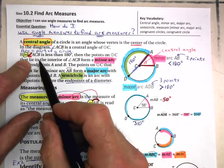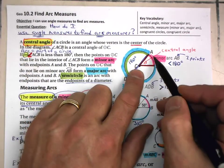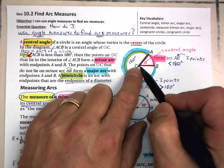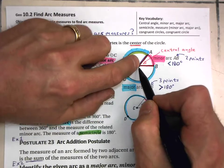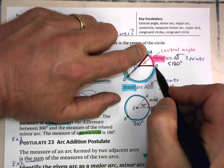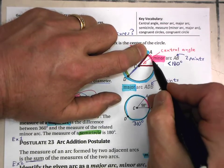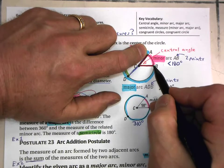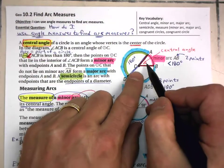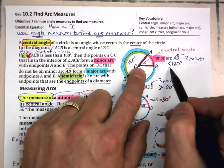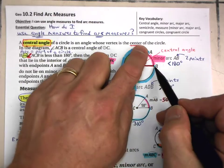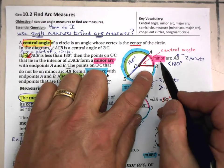As we think about this arc, let's look at its central angle. It begins at the center and comes out and intercepts this part of the circle. This is an arc created by this central angle. When the central angle is less than 180 degrees, we call that arc a minor arc.